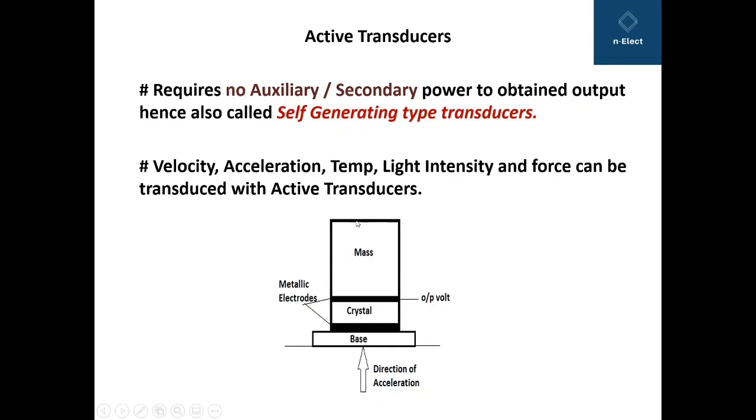Here one arrangement is shown where the crystal oscillator is sandwiched between two metallic electrodes and the crystal oscillator is fastened to the base. This is actually the rocket floor which is accelerating in this direction, and some constant mass is placed on this sandwich.